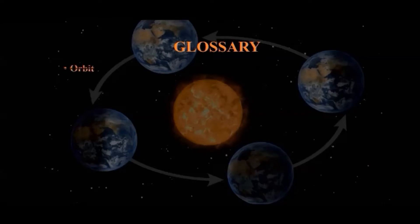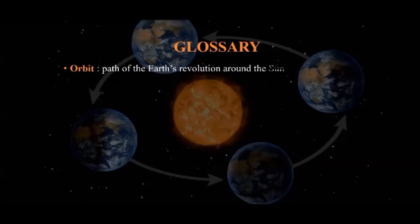Orbit. Orbit is the path of the Earth's revolution around the Sun. The path which the Earth follows to orbit around the Sun is elliptical in shape.